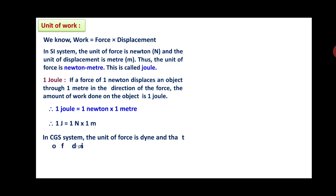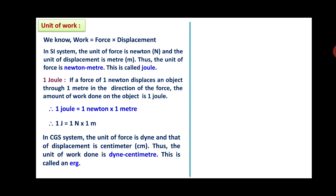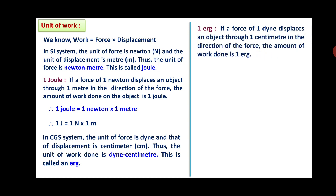In CGS system, the unit of force is dyne and that of displacement is centimeter. Thus, the unit of work done is dyne centimeter. This dyne centimeter is called erg. One erg is defined as: if a force of 1 dyne displaces an object through 1 centimeter in the direction of the force, the amount of work done is said to be 1 erg. Therefore, 1 erg = 1 dyne × 1 cm.